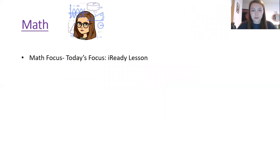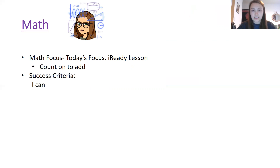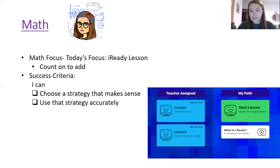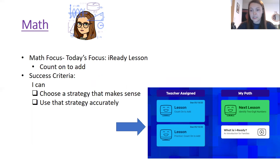For math, our focus today is to complete one iReady lesson called Count On to Add. Your success criteria is: I can choose a strategy that makes sense and use that strategy accurately to solve the problems in your iReady lesson. That is on the teacher-assigned side — there are two lessons in the blue box for Count On to Add. Pick one to complete today. If you've already completed your Count On to Add lessons, you can work on My Path lessons on iReady if you'd like.